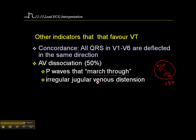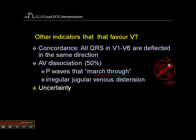Clinically, look at the patient's neck veins. If the patient has AV dissociation and a wide-complex tachycardia, there's a good chance they'll have irregular jugular venous distension. This happens because the atria are contracting against closed AV valves while the ventricles are contracting, causing blood to back up into the neck. Finally, as mentioned earlier, if you have a wide-complex regular tachycardia and you're not sure of the origin, it's V-tach until proven otherwise.